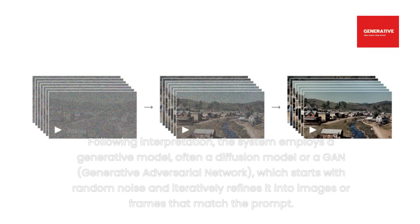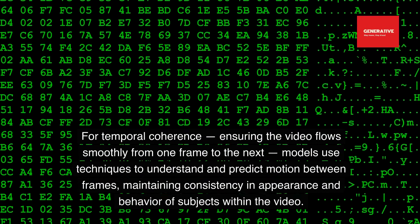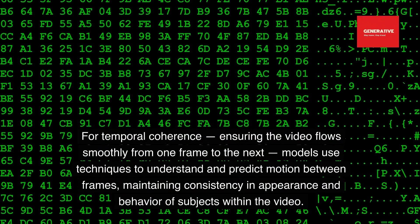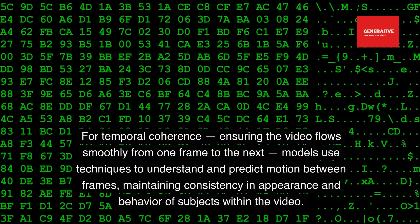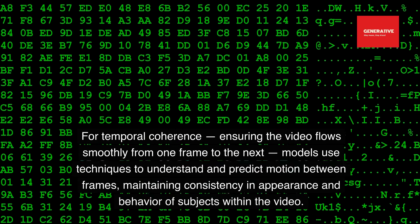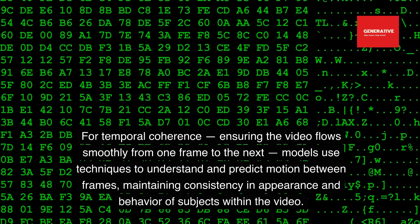Following interpretation, the system employs a generative model — often a diffusion model or a GAN, generative adversarial network — which starts with random noise and iteratively refines it into images or frames that match the prompt. For temporal coherence, ensuring the video flows smoothly from one frame to the next, models use techniques to understand and predict motion between frames, maintaining consistency in appearance and behavior of subjects within the video.